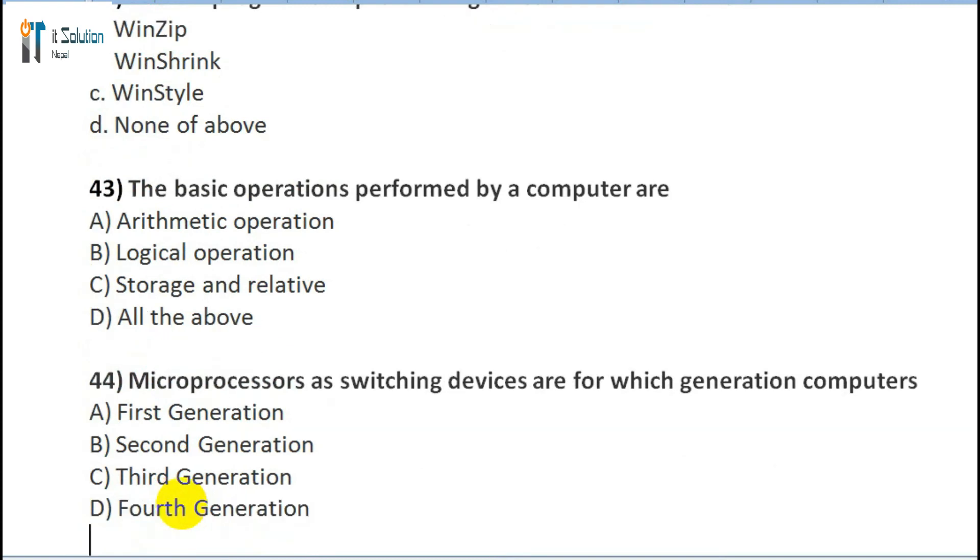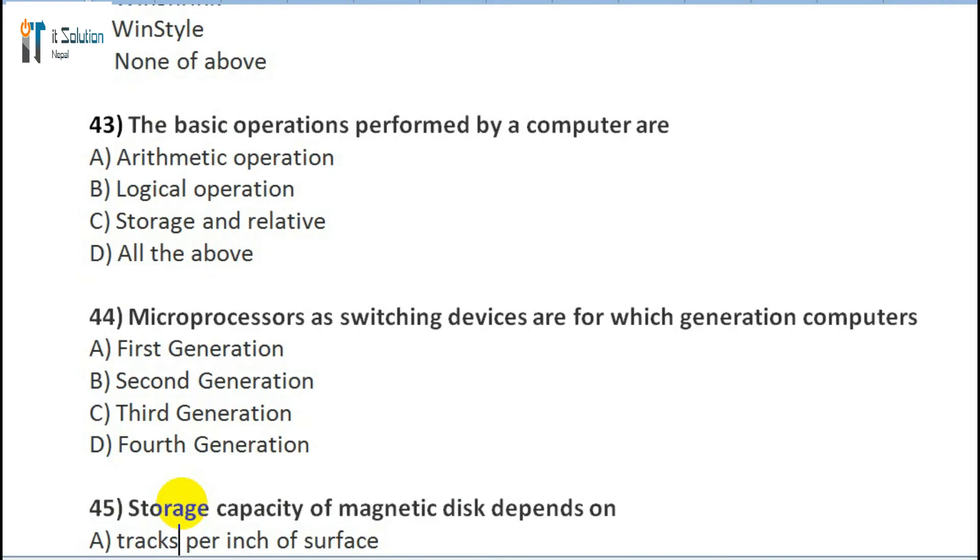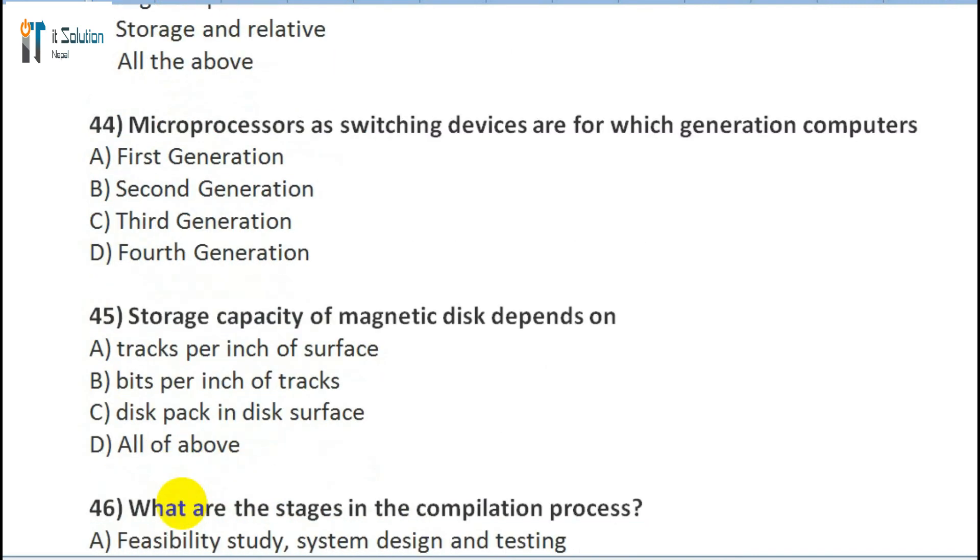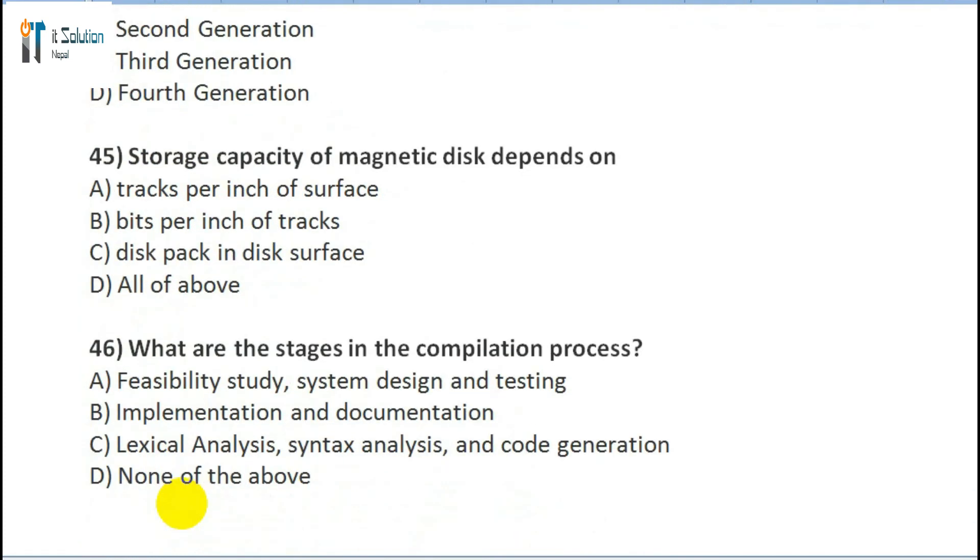Question 44: Microprocessors as switching devices are for which generation of computers? A) First generation, B) Second generation, C) Third generation, D) Fourth generation. Question 45: The storage capacity of magnetic disk depends on: A) Tracks per inch of surface, B) Bits per inch of track, C) Disk packs in the surface, D) All of above. Question 46: What are the stages in the compilation process? A) Feasibility study, system design, and testing, B) Implementation and documentation, C) Lexical analysis, syntax analysis, and code generation, D) None of the above.